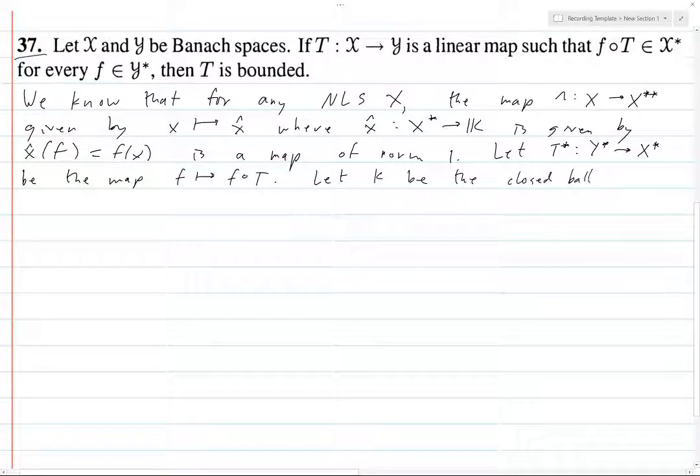And then let K be the closed ball of radius 1 in X. x̂T*, this collection where x ranges over elements of X, is contained in Y**. Why is that? Well, T* takes values in Y* and when you send it to T*, this is of course composition.